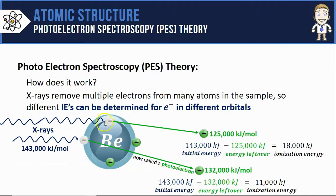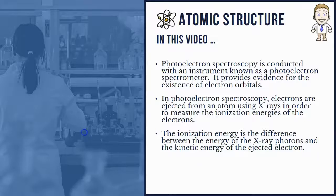So now we know the ionization energies of electrons in the first and second energy levels. That also wraps up this video on photoelectron spectroscopy theory. Here's a brief summary.